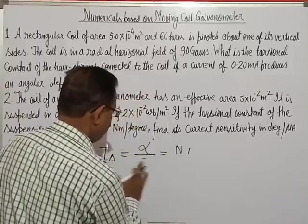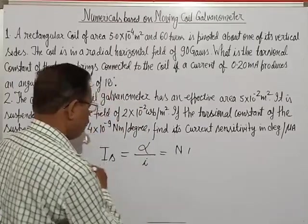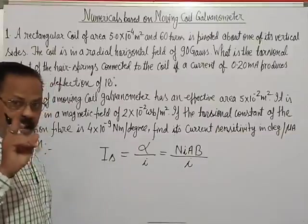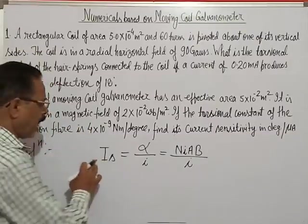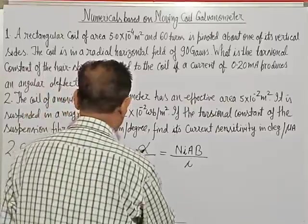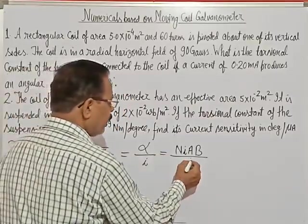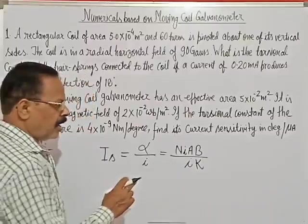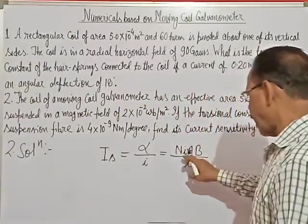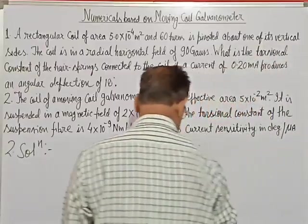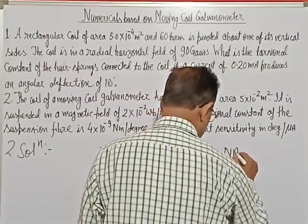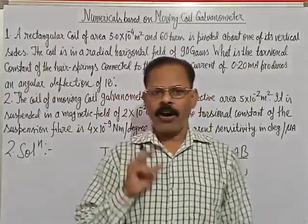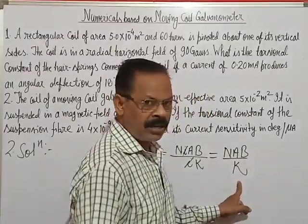Current sensitivity IS equals alpha upon I, where alpha is angular deflection and I is current. The formula is: alpha equals NABI upon K. So current sensitivity IS equals NAB upon K, where N is number of turns, A is area, B is magnetic field, and K is torsional constant.